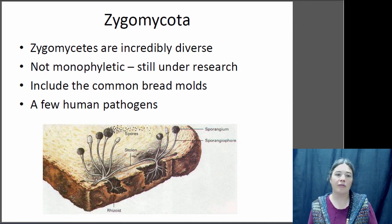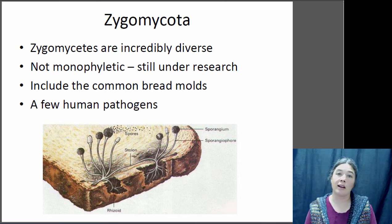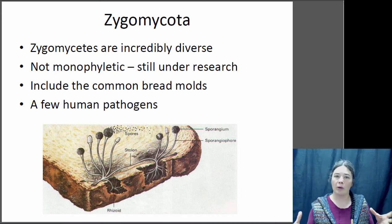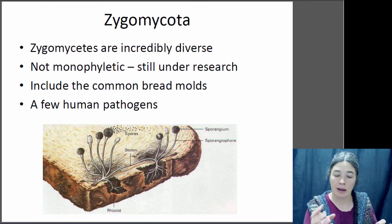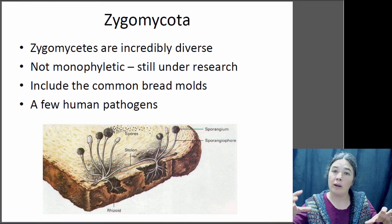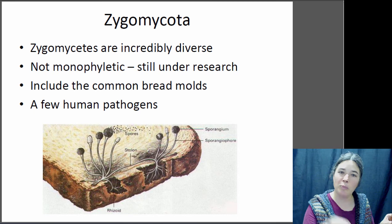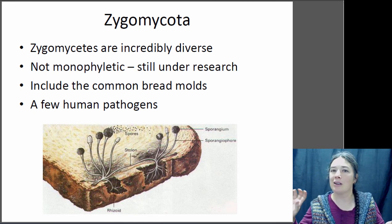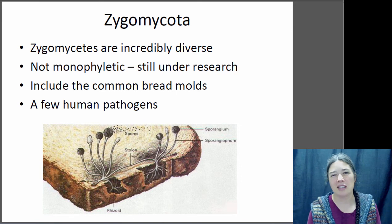The Zygomycota is a very diverse group — it's not monophyletic, probably paraphyletic, and still under a lot of research. It contains things like bread mold, which I'm sure you've seen. One note about bread mold: by the time you see the growth on the surface of your bread with spores being produced, there are already hyphae from that fungus throughout the entire bread loaf. You can't just pick off that little bit because you're only picking off the reproductive part — there's still bread mold hyphae throughout the bread.